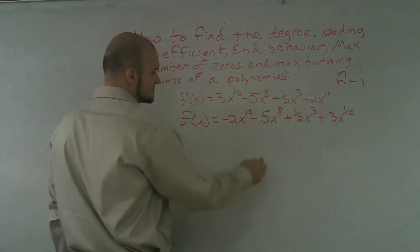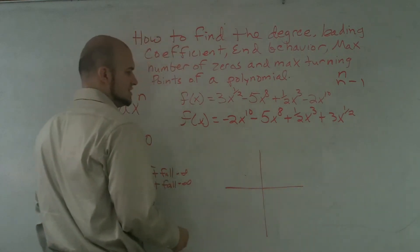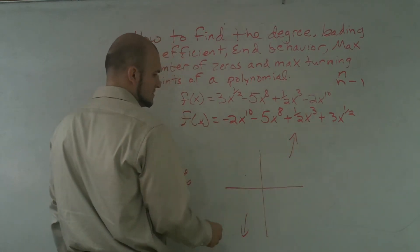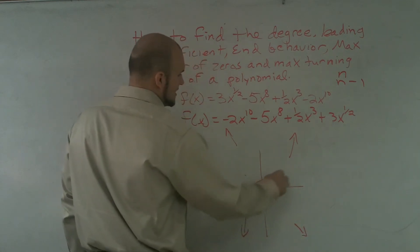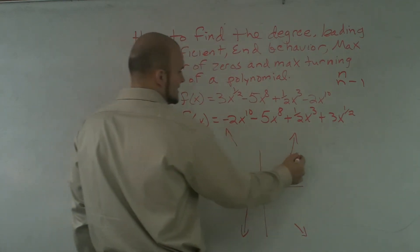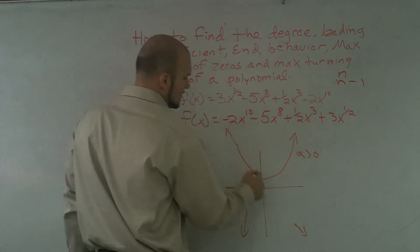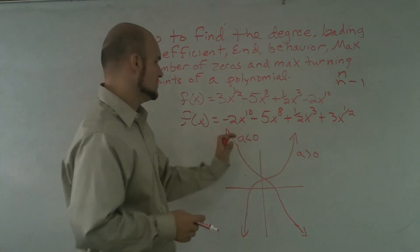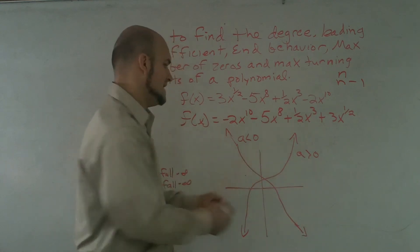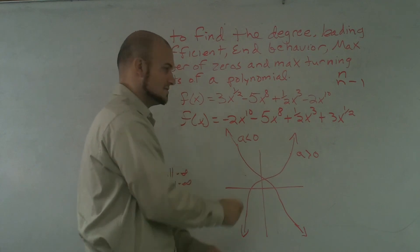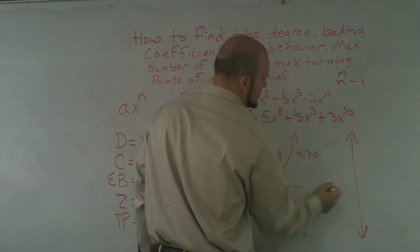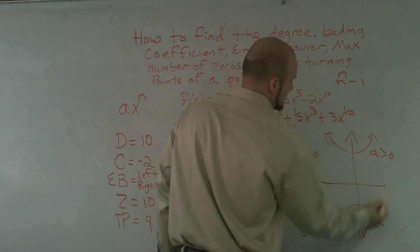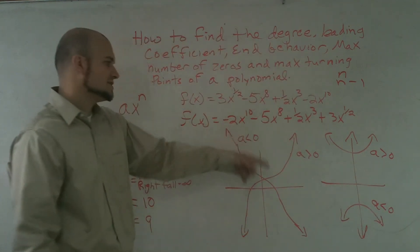One thing to remember: when the degree is odd, the end behavior is different. If a is greater than 0, the graph falls to the left and rises to the right. If a is less than 0, it rises to the left and falls to the right. The even-degree case is what we just went over.